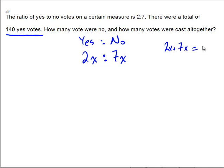But this specific part of the problem says there's 140 yes votes. So remember, the yes votes were represented by 2x. We're going to say 2x equals the 140 yes votes.